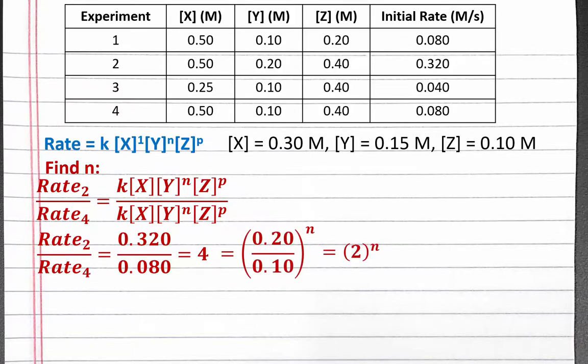So on the right, we'll just have the ratio of the initial concentrations of Y, which is 2 raised to the n power. So when we doubled the concentration of Y, our initial rate quadrupled. This is a square relationship, so n equals 2. We could also use math to solve this equation, taking the log of both sides. But, as we mentioned, our numbers are very clear.